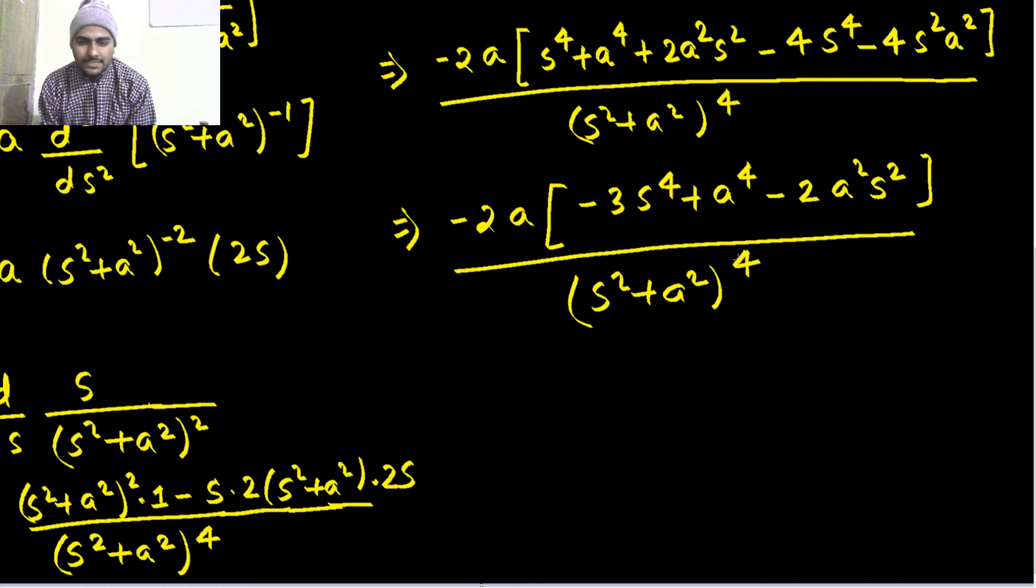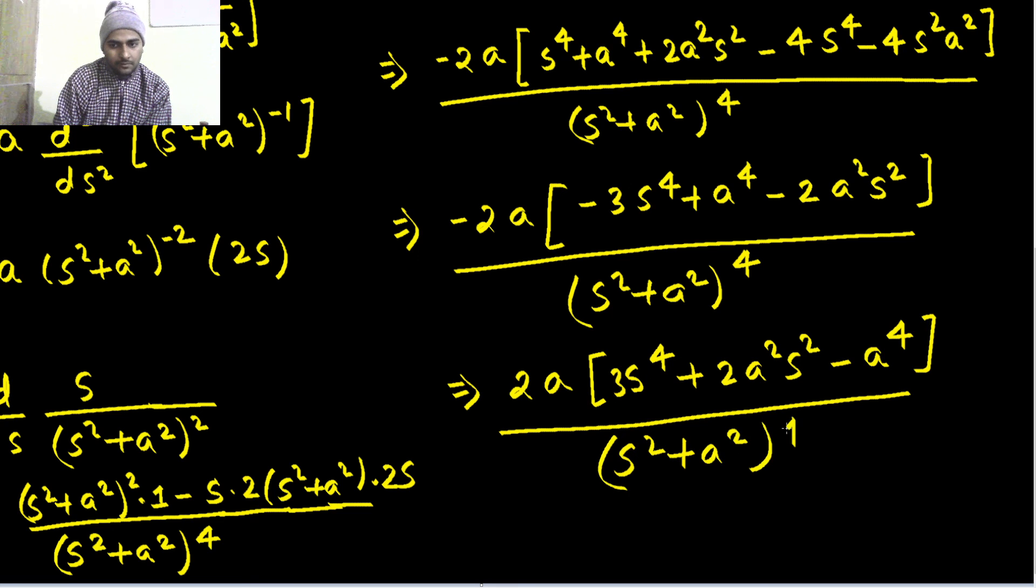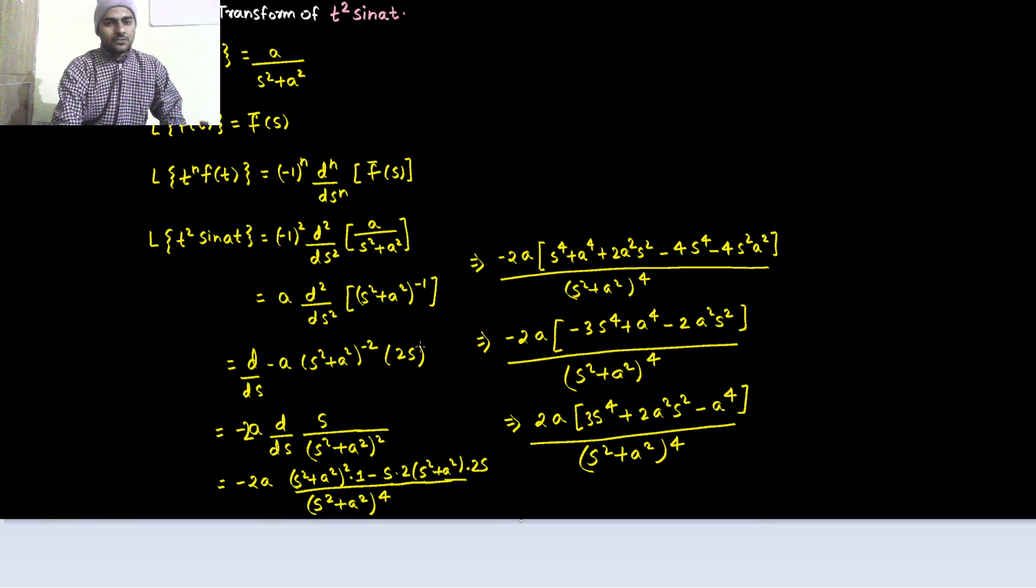So, we can't do much with this. So, if you wish, you can take the negative sign inside and a also inside if you want. Leave that 2 a, just take negative sign inside. So, you will get 3s power 4 plus 2 a square s square minus a power 4 divided by s square plus a square power 4. So, this is what the Laplace transform we got for t square sine at.